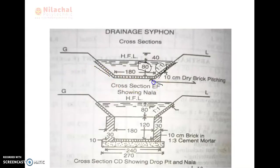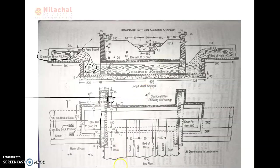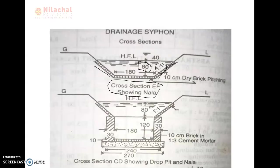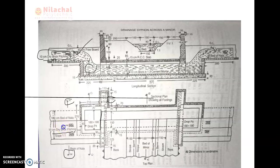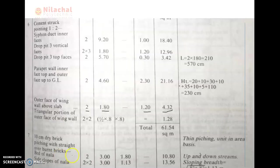The cross section of the nada is E-F. E-F is the cross section of nada, where 10 centimeter dry brick is used. We need to check in the case of nada: this side, the pitching is used — this is the bed side and this is the side slope side. For one cross section, there are two side slopes and one bed, but for two nadas, there are two beds and four sides of pitching. The bed of nada is two numbers and side slope of nada is 2 into 2, because for one side it is 2, and for two sides it is 2 into 2.